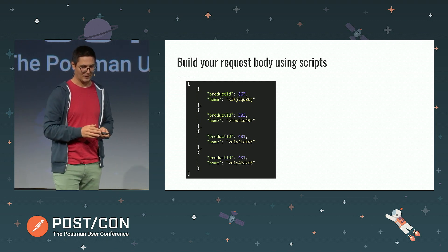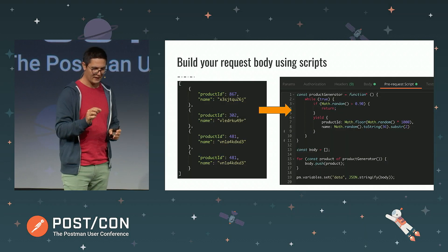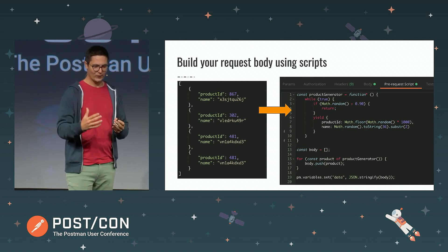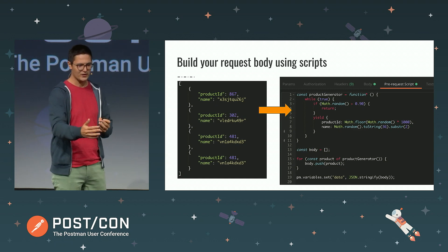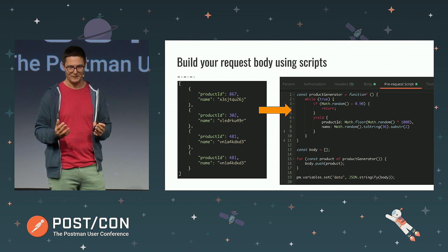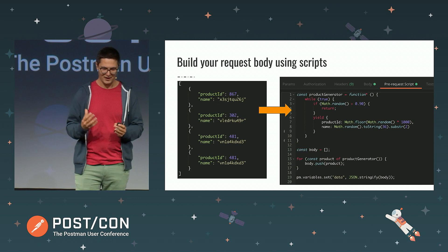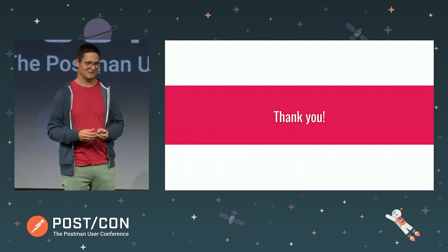One way to solve this is using a generator function — another ES6 feature. The code looks a bit more complex, but two things remain the same: you're still defining the body as a variable and still using JSON.stringify to transform it into JSON. You use a product generator — sort of like a dynamic array — iterate over it, and push items into your products array. Inside that function you can add randomness or whatever dynamic logic you need. The way you want it is totally up to you. Just use the power of JavaScript to create really complex request bodies in Postman. I hope you've learned something new — thank you very much.